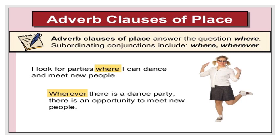For example: 'I look for parties where I can dance and meet new people.' Here, 'I look for parties' is the independent clause. 'Where I can dance and meet new people' is the dependent clause, which needs completion, and it describes the place that you prefer to go to.